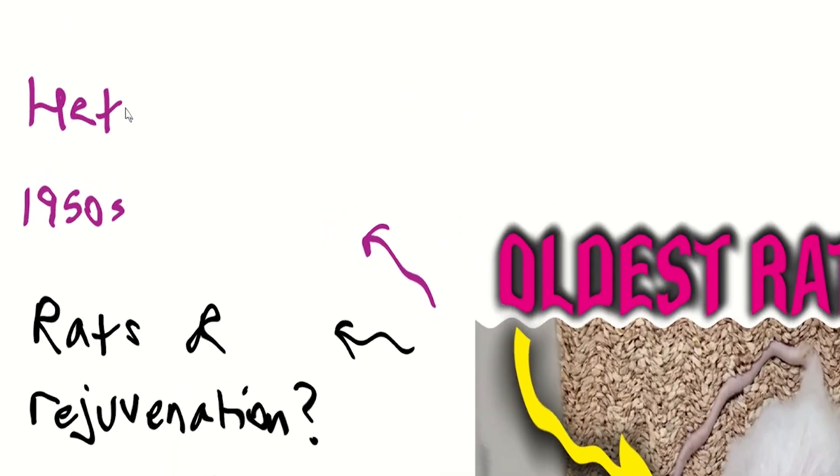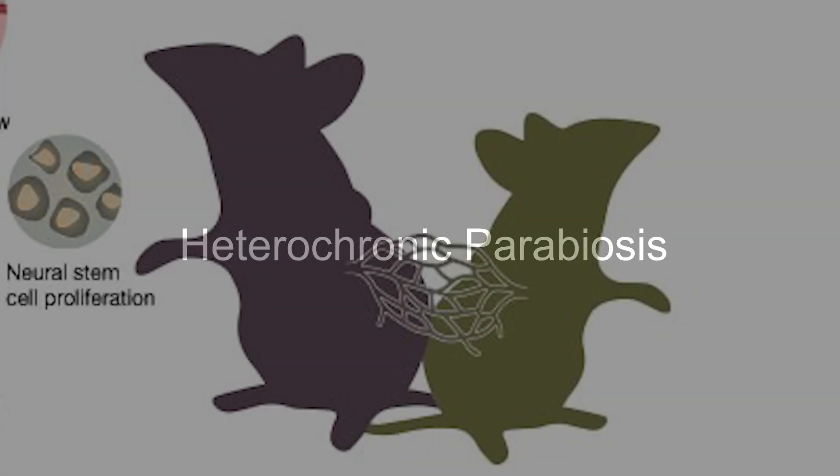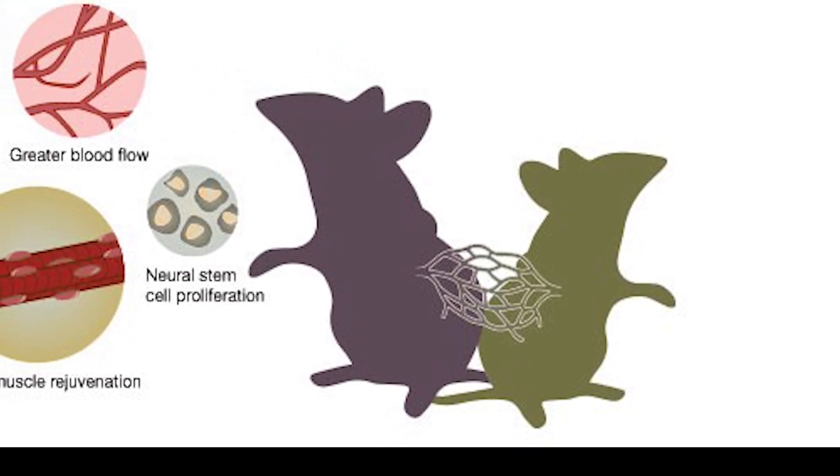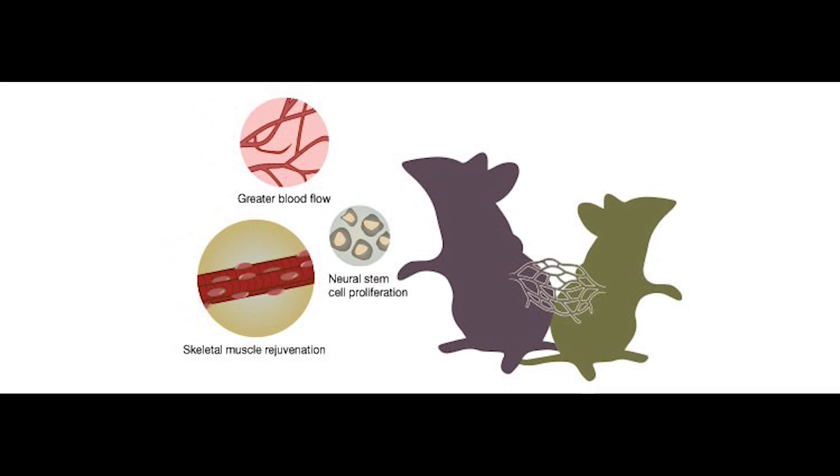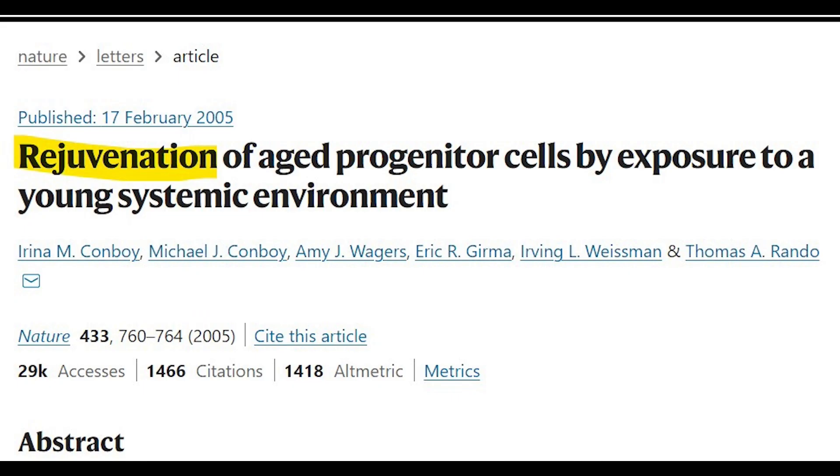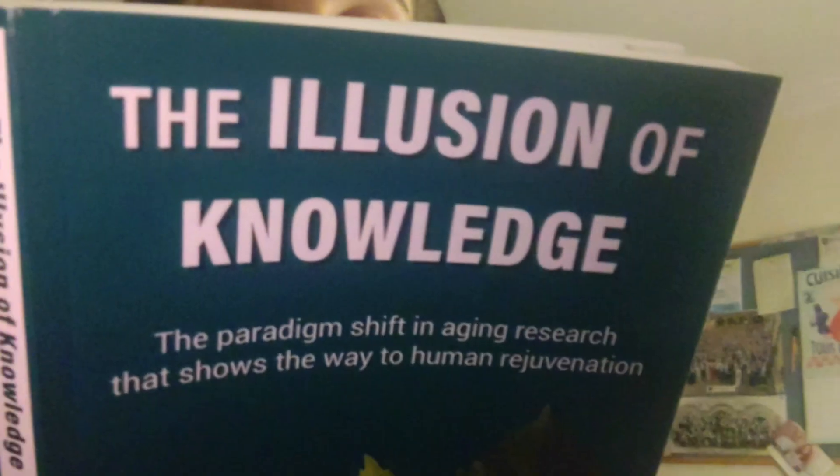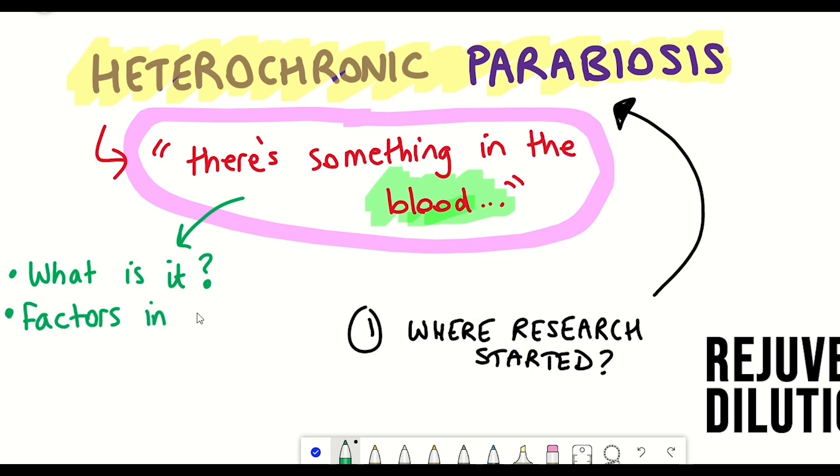Heterochronic parabiosis involves surgically joining two animals together such that they share a circulatory system. Previous data has shown that when you do heterochronic parabiosis between old and young animals, the old animals seem to benefit. In particular, there's this landmark paper in 2005 by the Conboy Lab that showed that it ameliorated aging phenotypes. So Katcher sought out to further test this theory and he was a supporter of the presence of there being potentially rejuvenating factors in young blood.